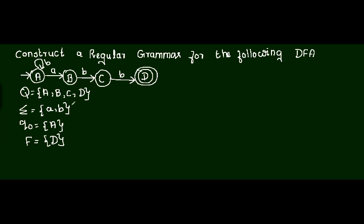Now I want to convert this DFA to regular grammar. Grammar consists of four parts. For V_N, the set of non-terminals, I will write all the states: A, B, C, and D. For Sigma, the set of terminals — that means small letters — here we have used two inputs: a and b.